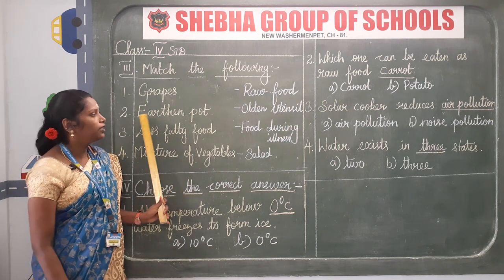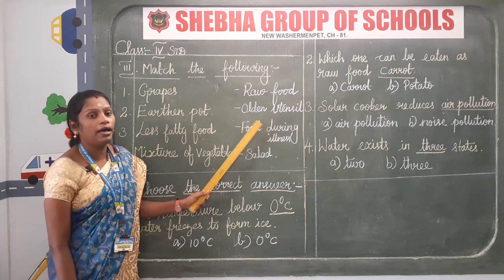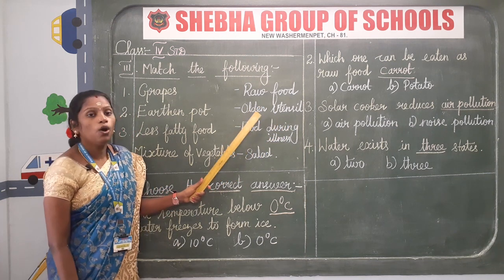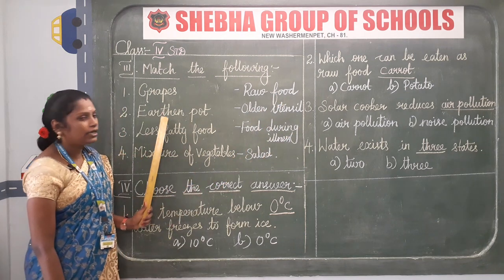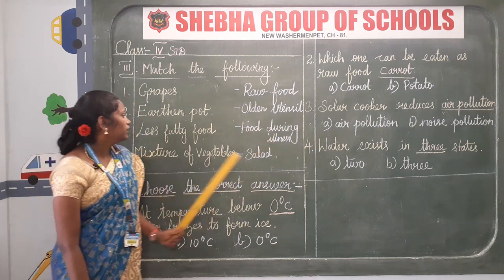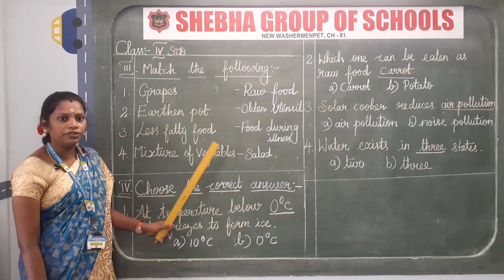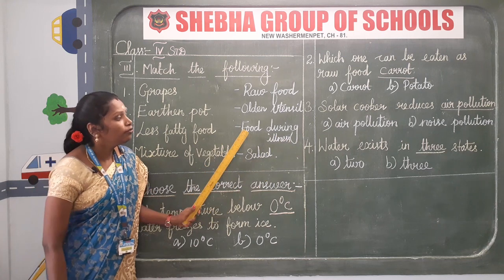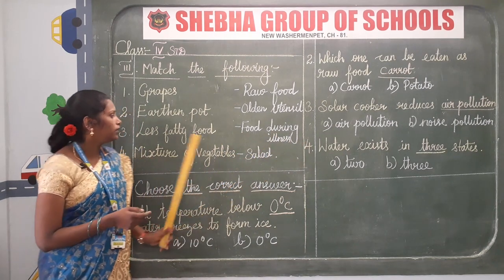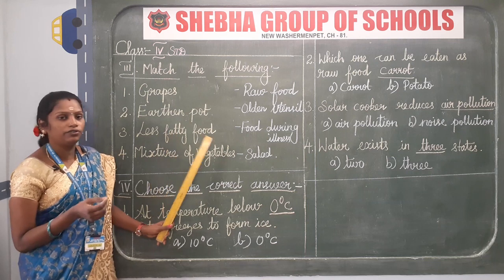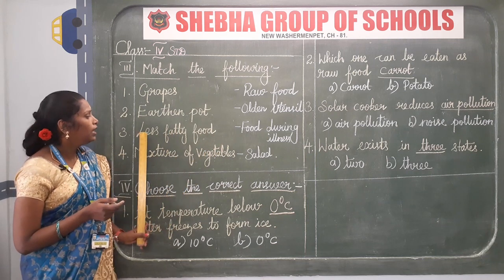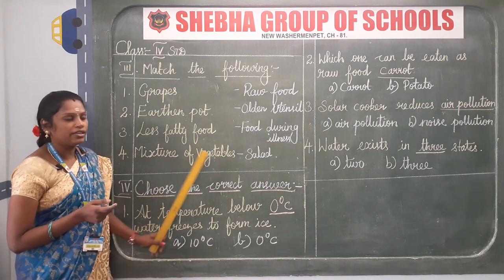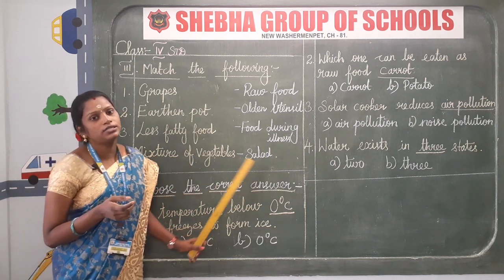Earthen pot — olden utensil. Third one: less fatty food — we eat less fatty food during illness because it is easy to digest, so the answer is food during illness. Fourth one: mixture of vegetables — the answer is salad.